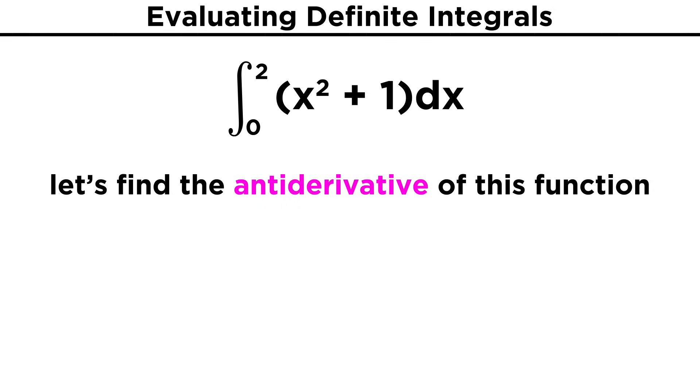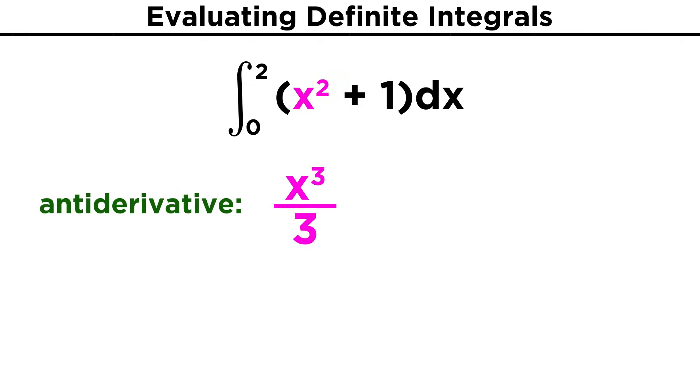Let's try something like x² + 1 dx from zero to two. First things first, let's get the antiderivative of this function. x² will become x³ over three, and one will become x over one, or simply x.